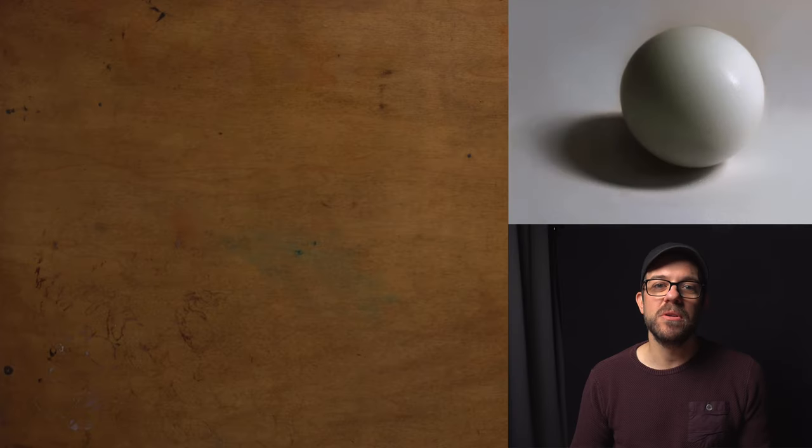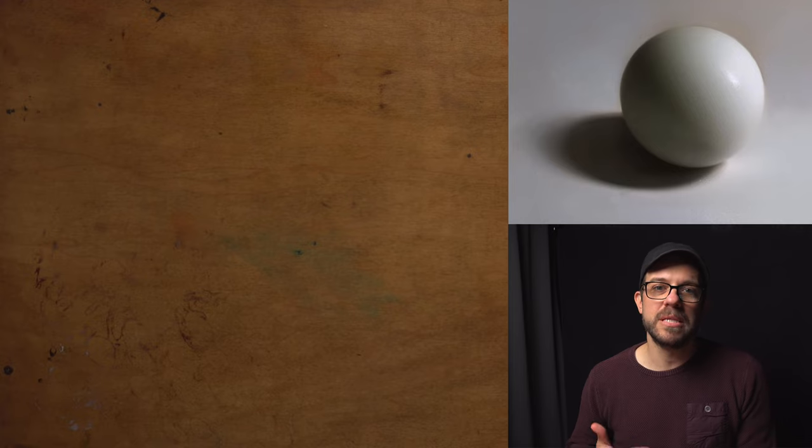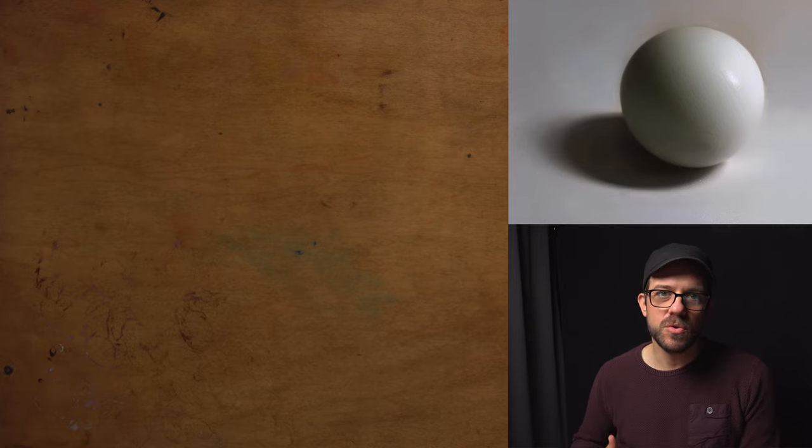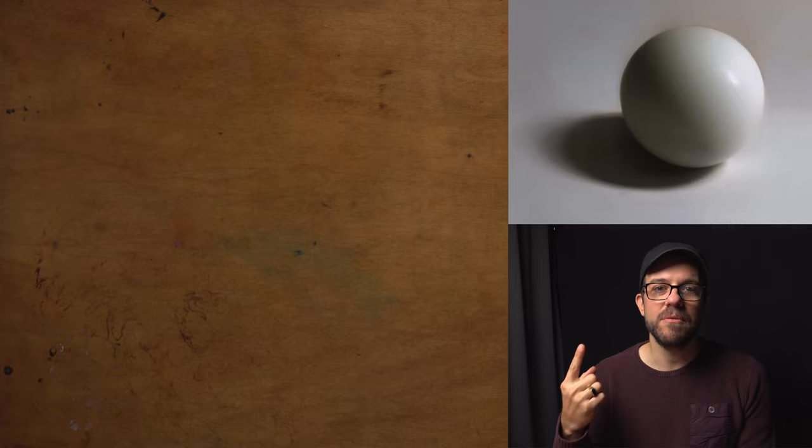This is going to be a practical lesson in value mixing specifically for grisaille painting. The sphere that is above me now is the project that this is going to be related to. So when I'm mixing up shadows and halftones, this is the image that I have in mind.